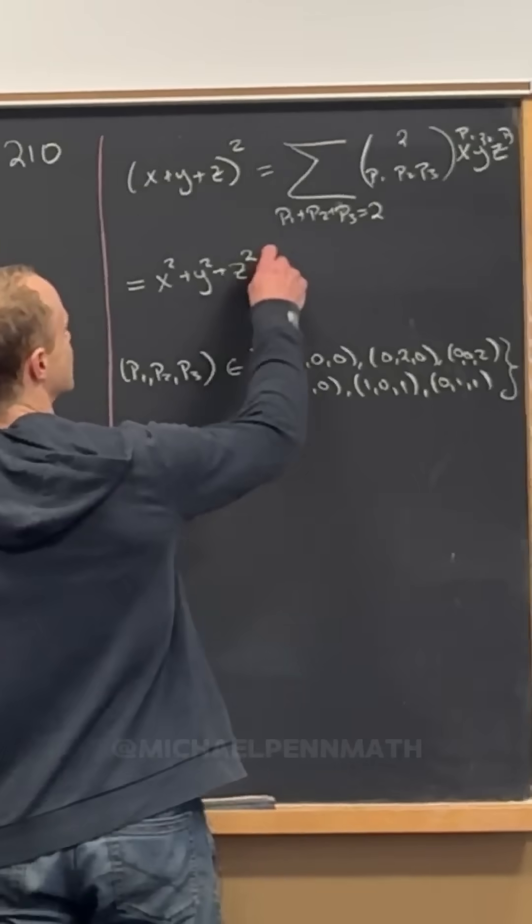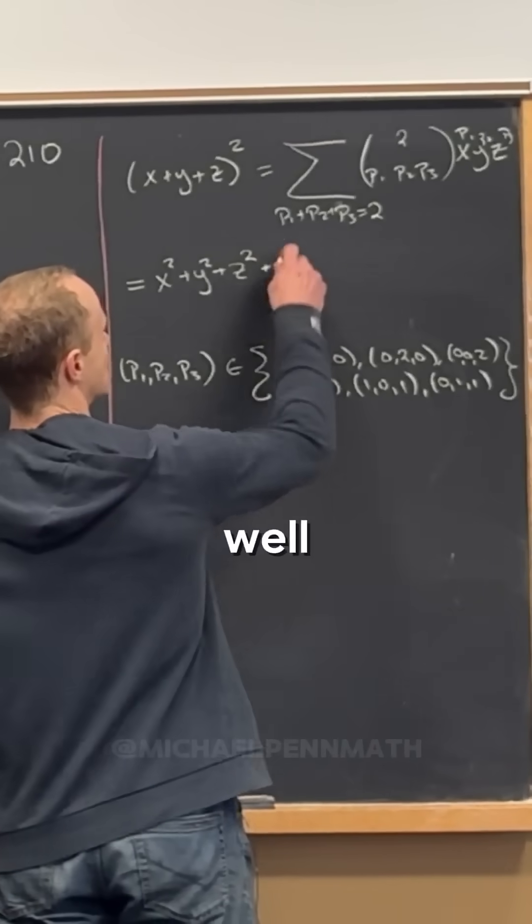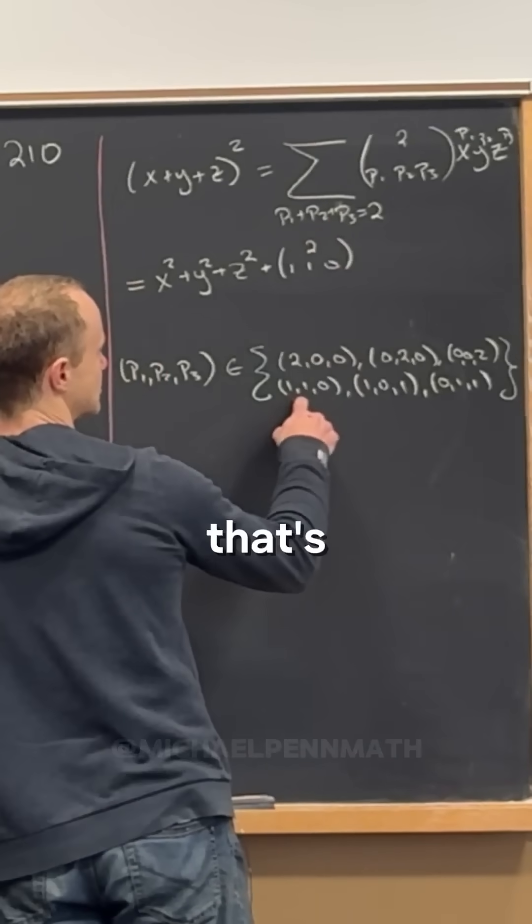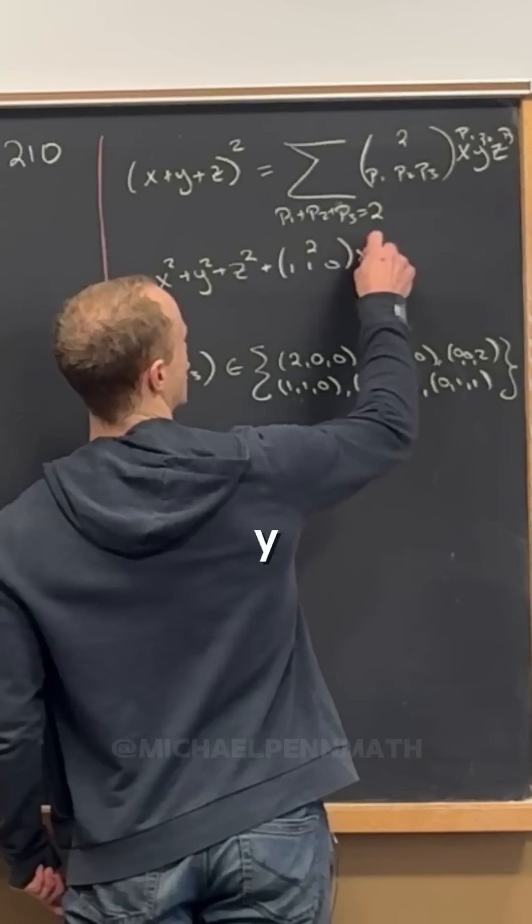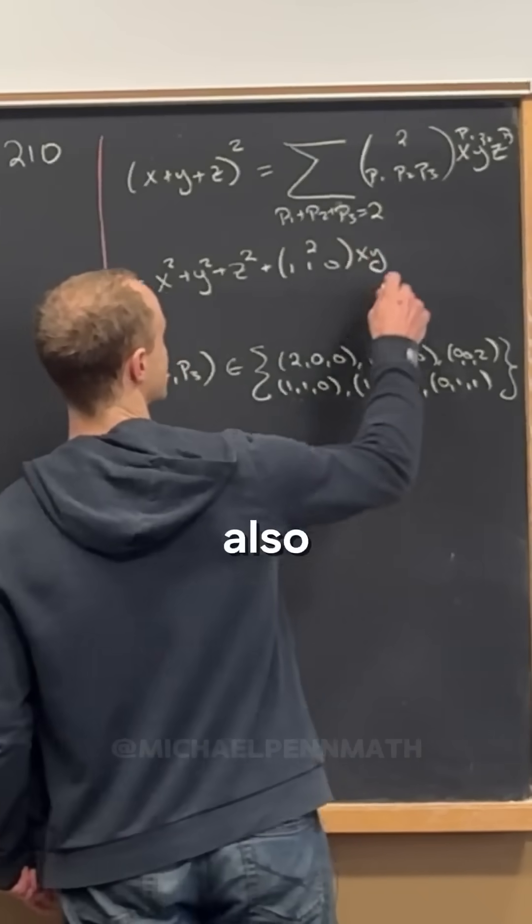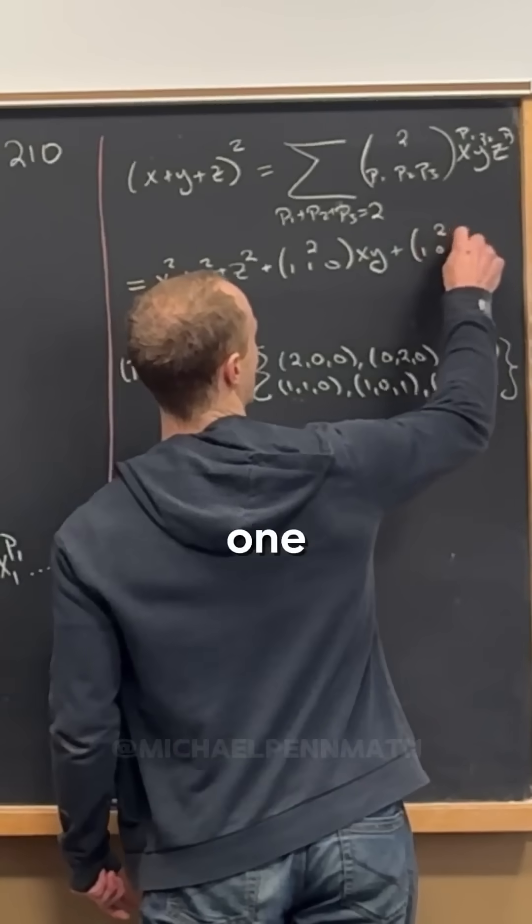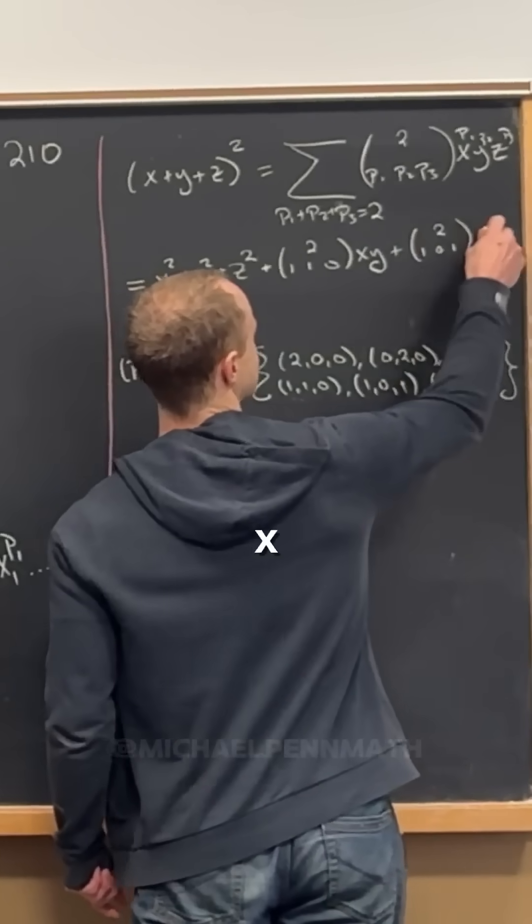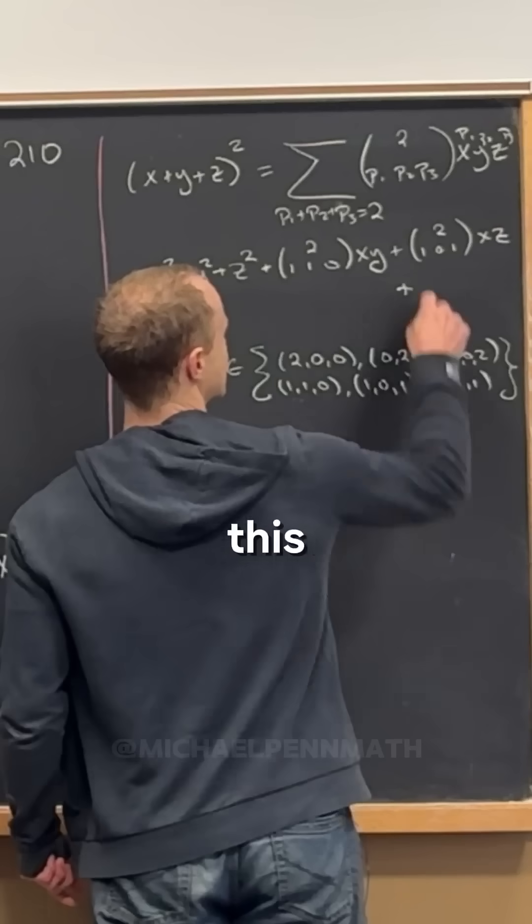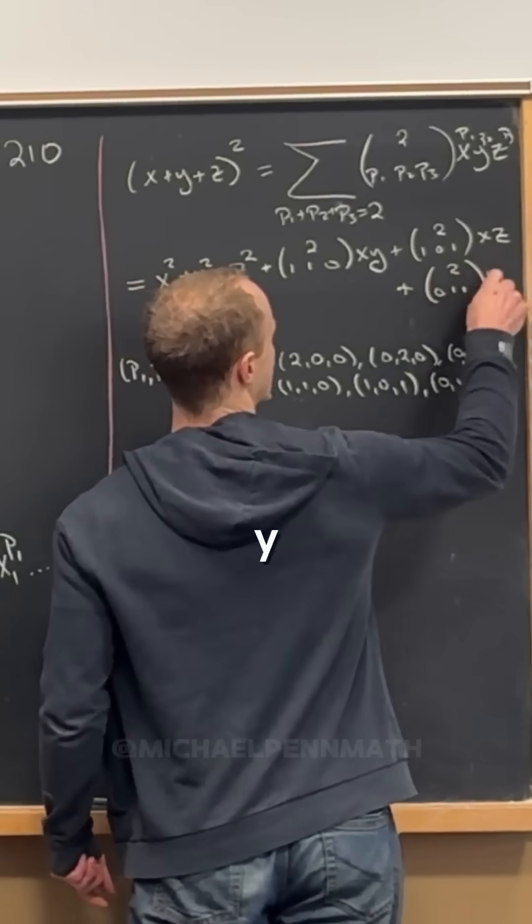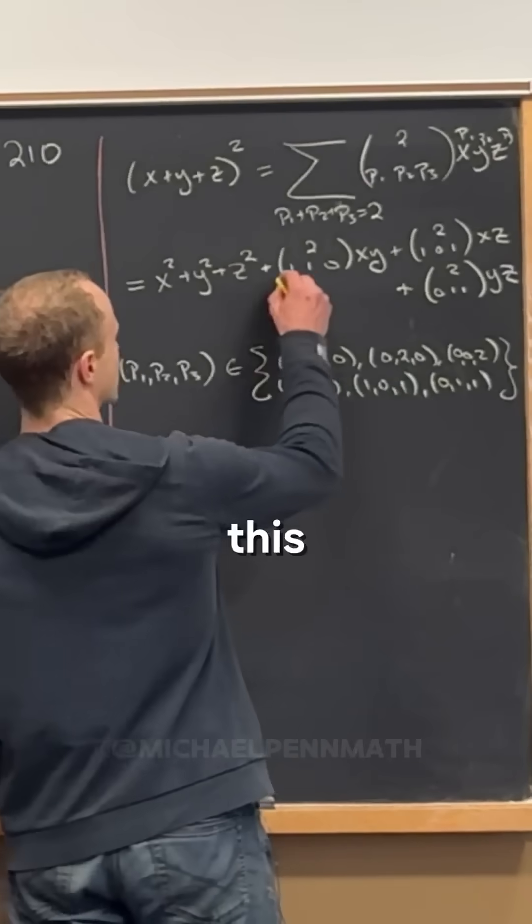And then let's see, this is going to be plus—well, we got 2 choose (1,1,0), and then what's this one? x times y. And then we also have 2, let's see, that's (1,0,1)—what's this one? x times z. And then this one is 2 choose (0,1,1), y times z.